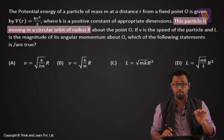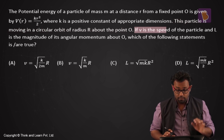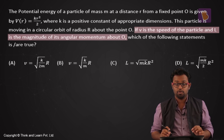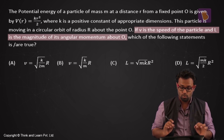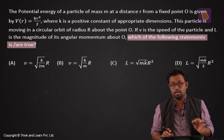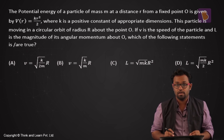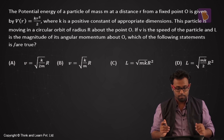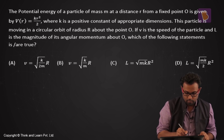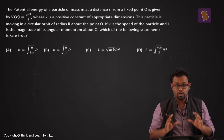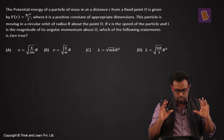This particle is moving in a circular orbit of radius capital R about the point O. If V is the speed of the particle and L is the magnitude of its angular momentum about O, which of the following statements is/are true? This is a multiple-answer question with partial markings. It's from mechanics, which usually bears around 41% of the JEE paper.